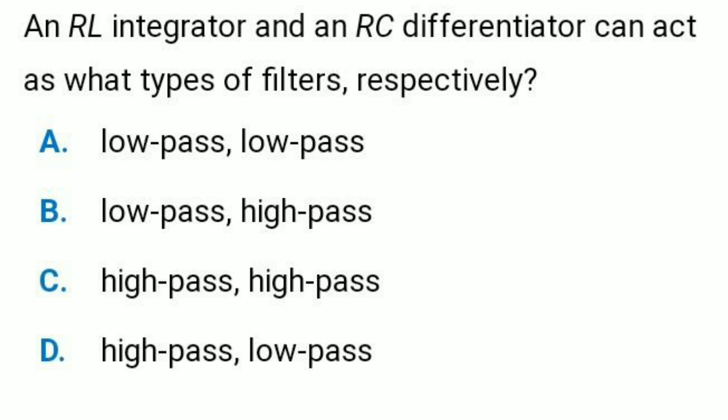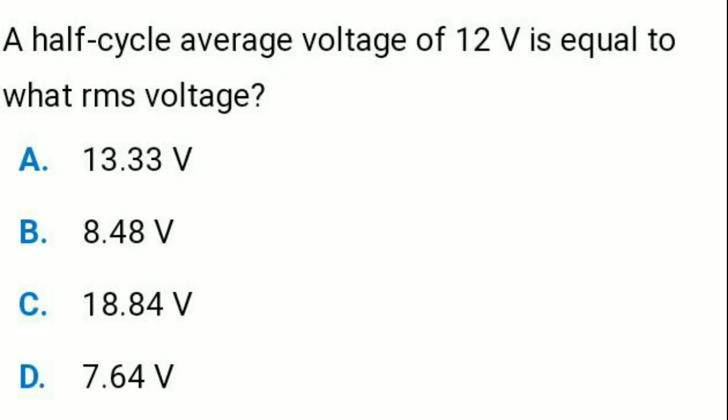Option A: low pass, low pass. Option B: low pass, high pass. Option C: high pass, high pass. Option D: high pass, low pass. The second question is: a half-cycle average voltage of 12 volts is equal to what RMS voltage?